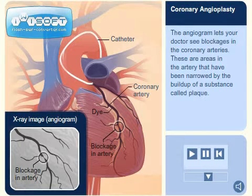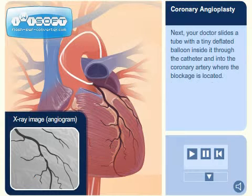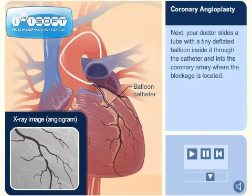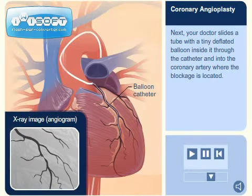These are areas in the artery that have been narrowed by the buildup of a substance called plaque. Next, your doctor slides a tube with a tiny, deflated balloon inside it, through the catheter, and into the coronary artery where the blockage is located.